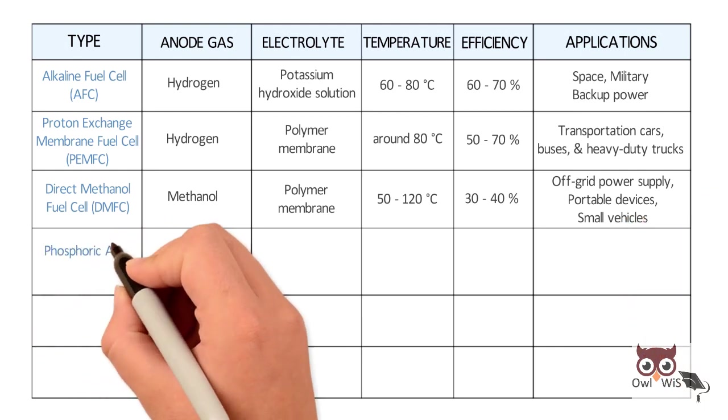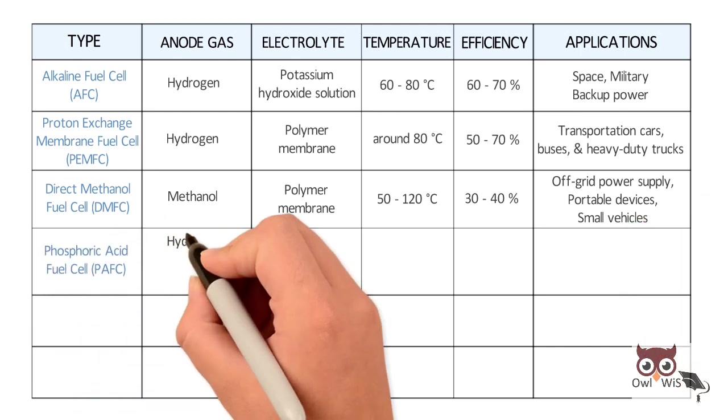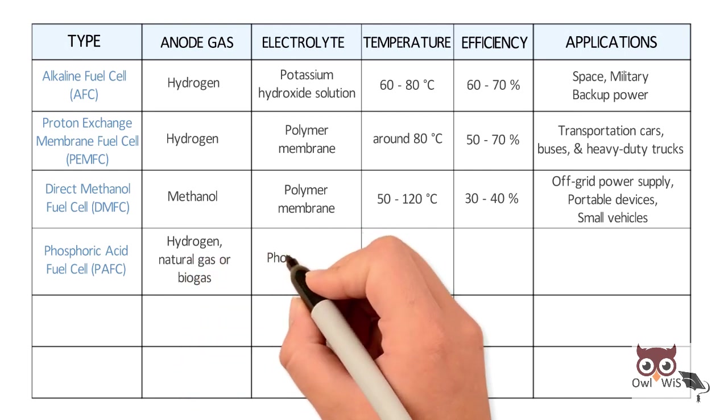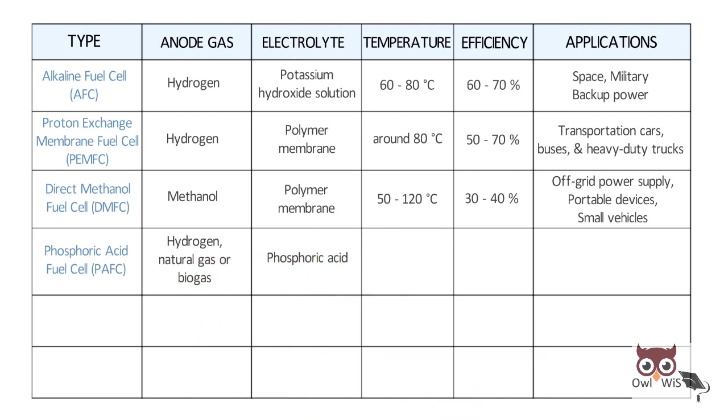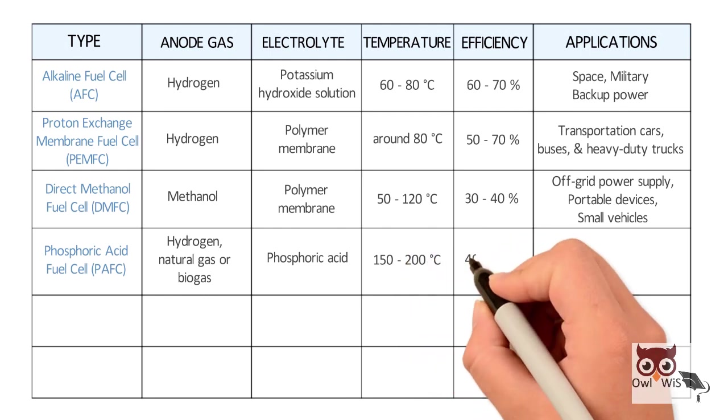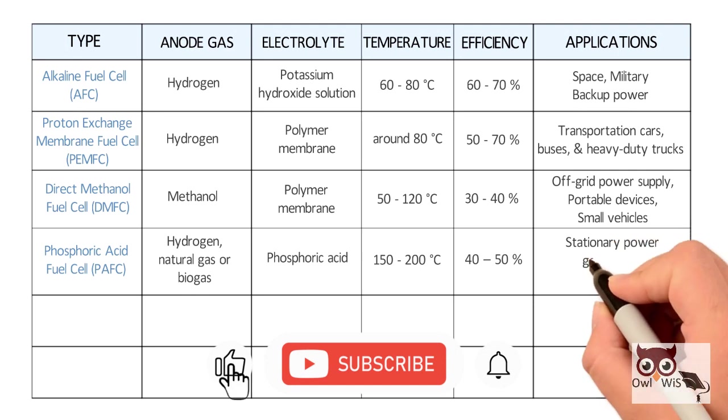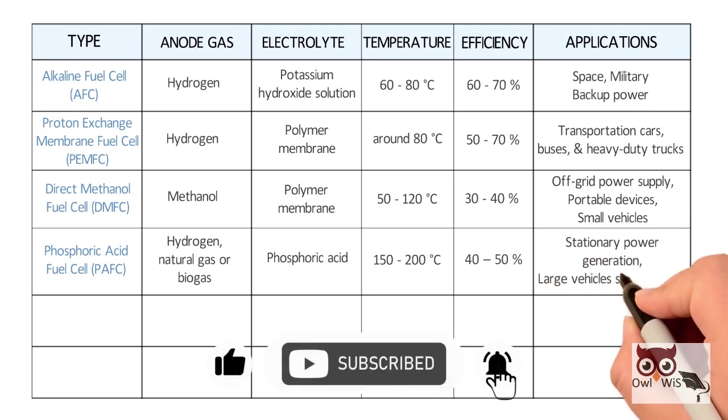Phosphoric acid fuel cell, PAFC. Hydrogen, natural gas or biogas is used at the anode. Electrolyte is phosphoric acid, with working temperature of 150 to 200 degree Celsius. 40 to 50 percent efficiency. Used in stationary power generation and large vehicles such as buses.